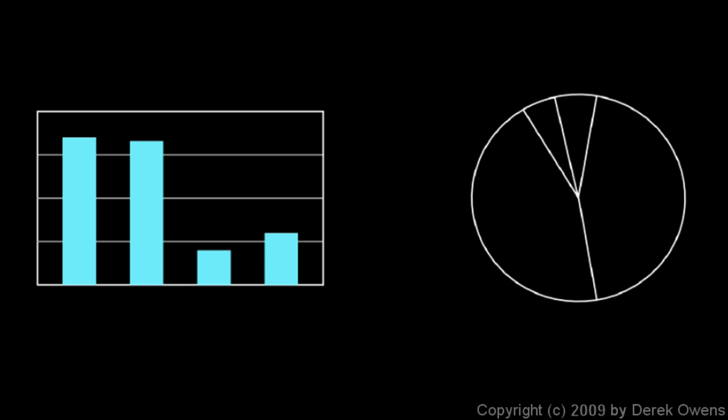One graph isn't necessarily better than the other — it depends on how you want to display your data and what aspects you want to make apparent. Two quantities being very nearly the same size is easy to discern on a bar graph, while how big those quantities are compared to the whole is easy to discern on the circle graph.